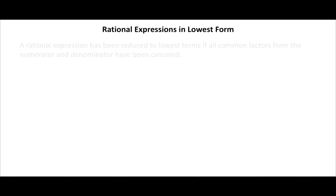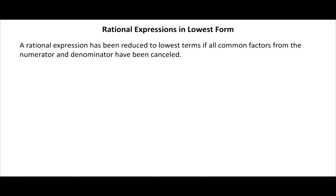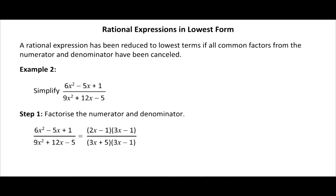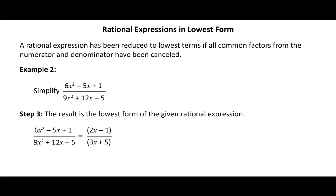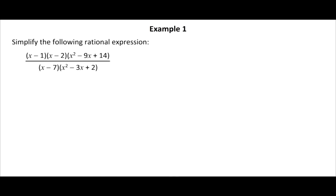A rational expression in lowest form has had all common factors from the numerator and denominator cancelled. For example, 22/8 simplifies to 11/4 by cancelling the common factor 2. The same method applies to rational expressions: Step 1 — factorize the numerator and denominator (e.g., numerator becomes (2x minus 1)(3x minus 1), denominator becomes (3x plus 5)(3x minus 1)); Step 2 — cancel the common factor (3x minus 1); Step 3 — the result (2x minus 1)/(3x plus 5) is the lowest form. Example: simplify (x minus 1)(x minus 2)(x squared minus 9x plus 14) divided by (x minus 7)(x squared minus 3x plus 2). Click the solution button to view the solution.